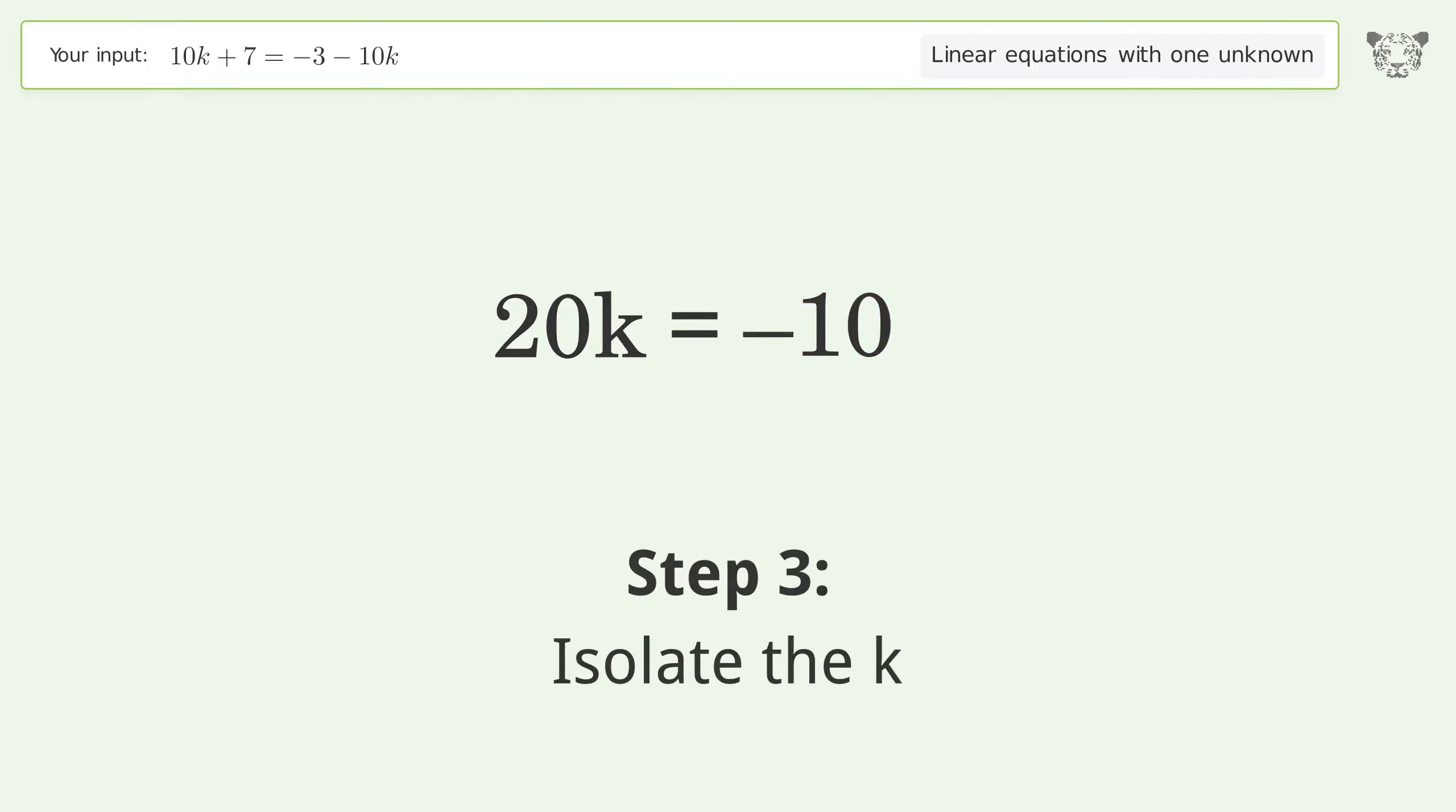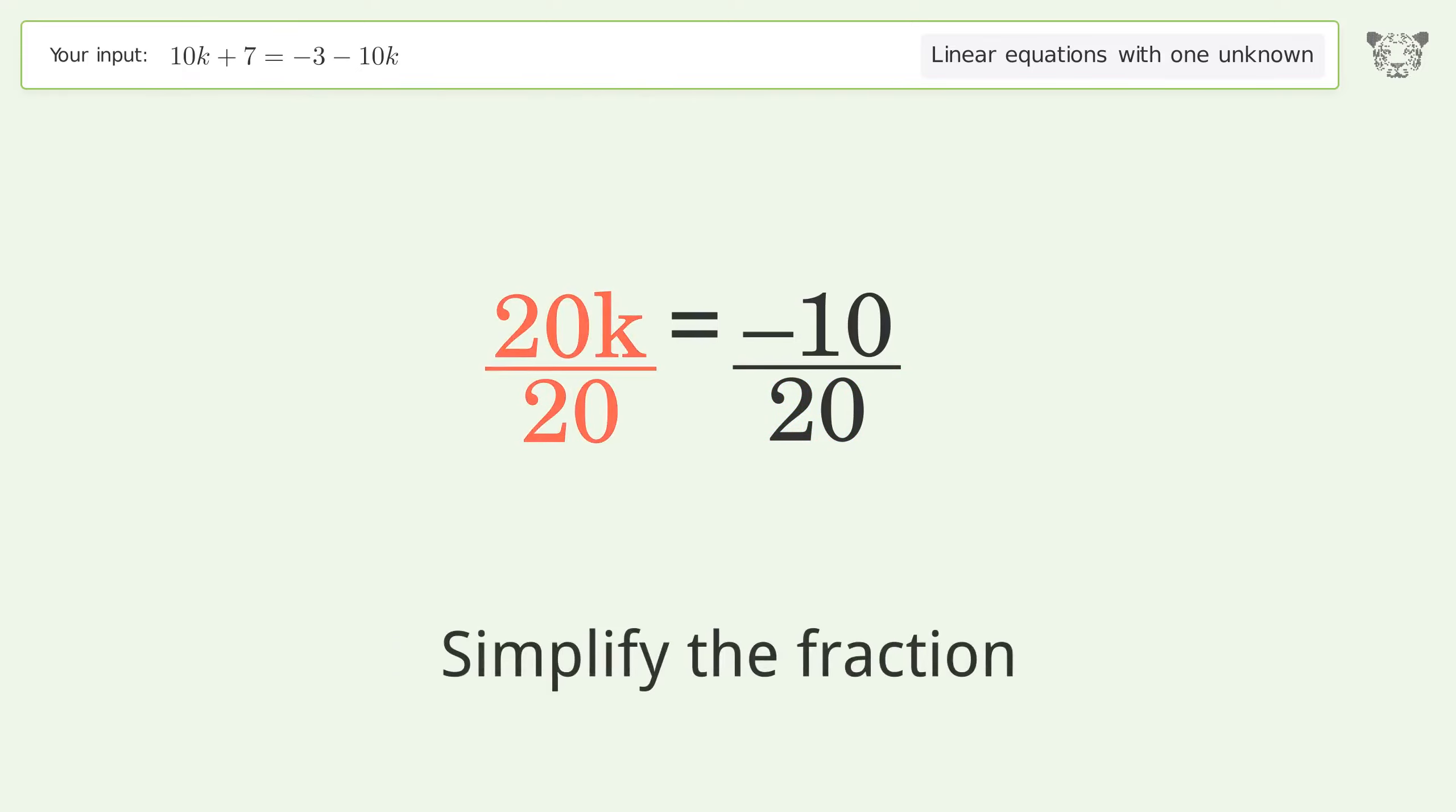Isolate k by dividing both sides by 20, then simplify the fraction.